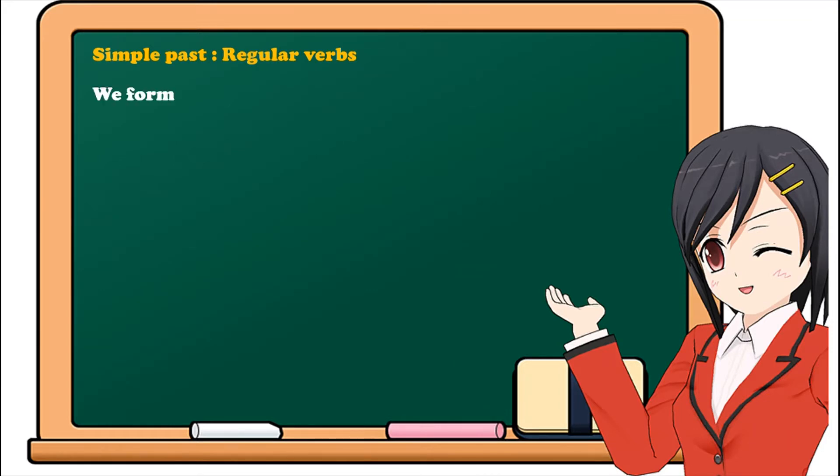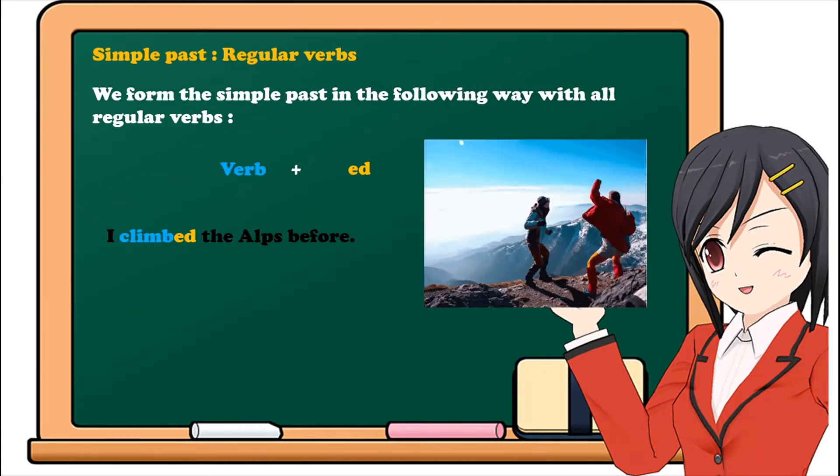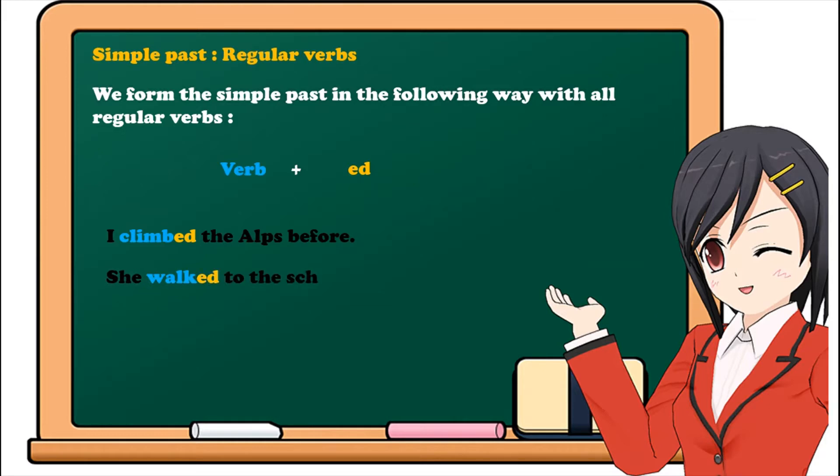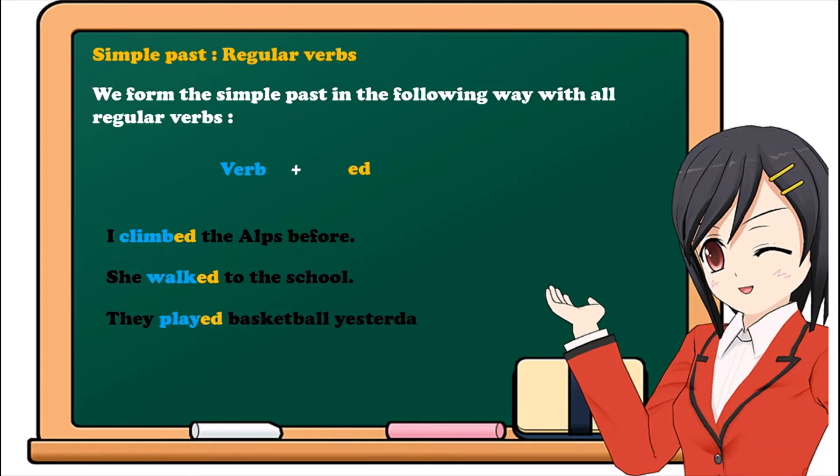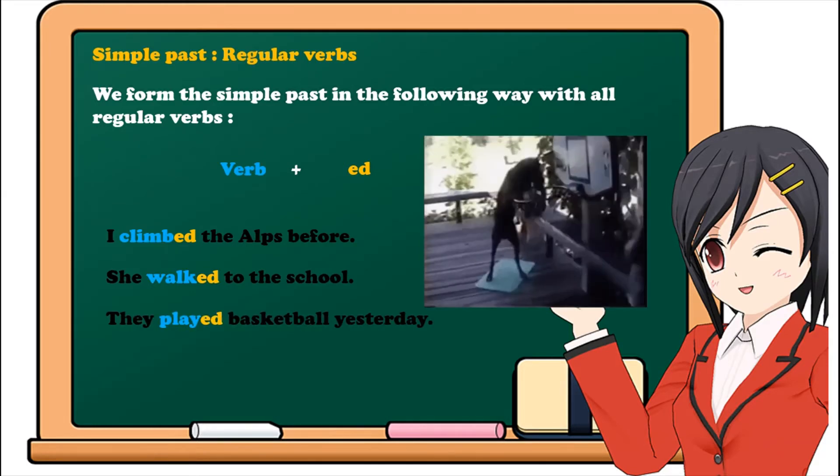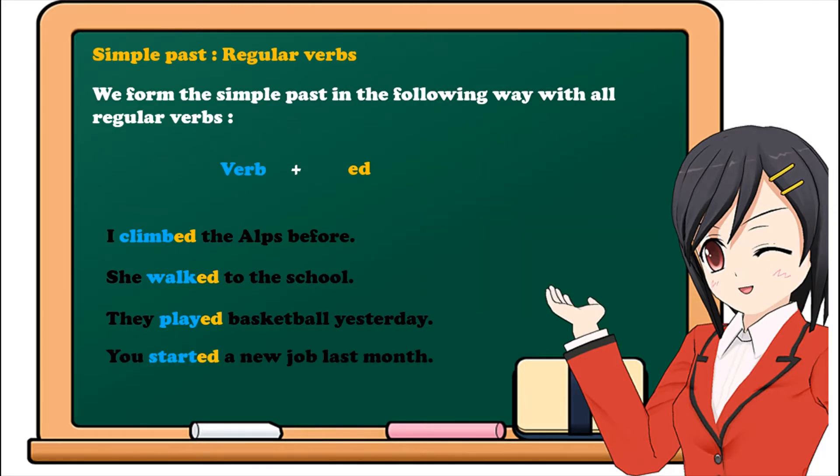We form the simple past in the following way, with all regular verbs: Verb plus ED. For example, I climbed the Alps before. She walked to the school. They played basketball yesterday. You started a new job last month.